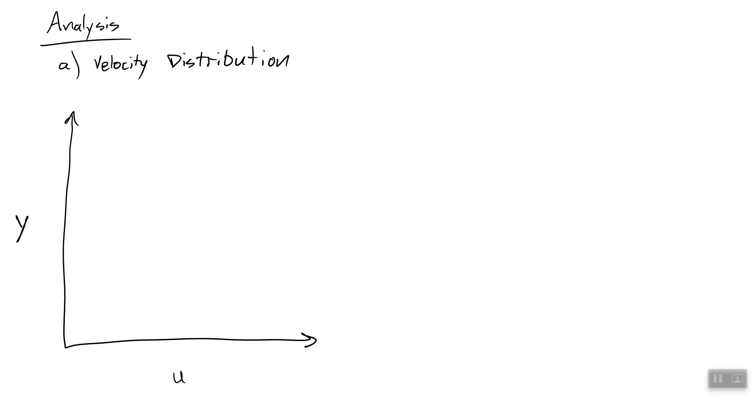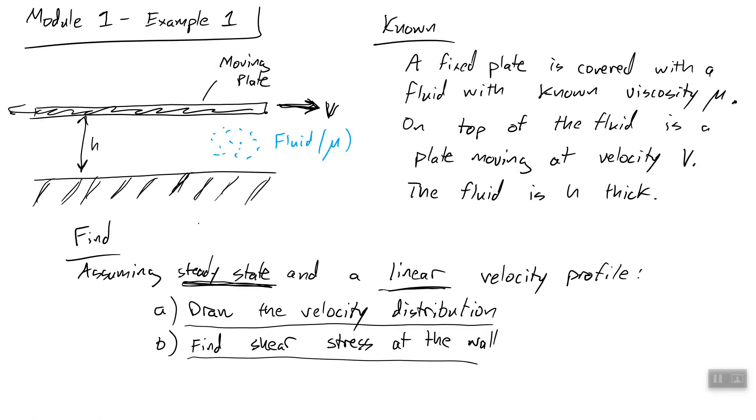We're going to say here is a velocity of zero, and this represents a velocity of v. We'll say zero starts here for y, and then we go to h. So going back, we know that at the wall, the fluid, this plate is moving this way, which means it is going to be dragging the fluid at the top with it. Likewise, the fluid at the bottom is stuck to the bottom plate. Remember the no-slip condition.